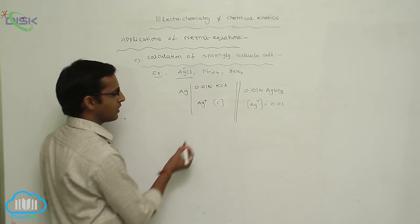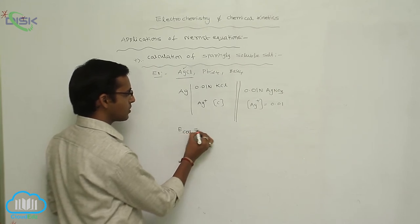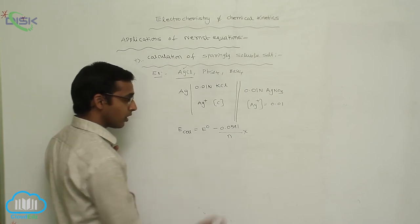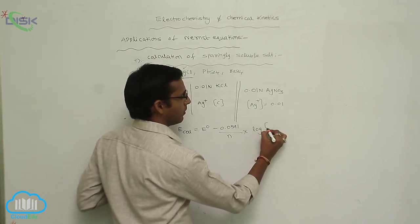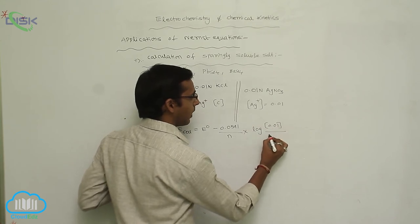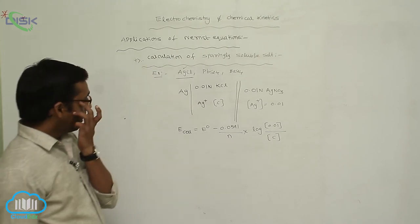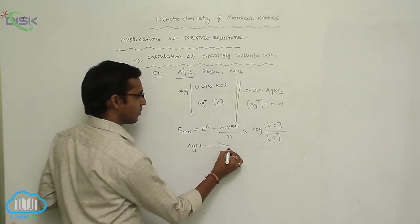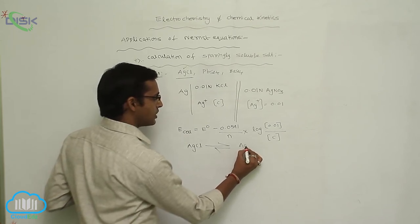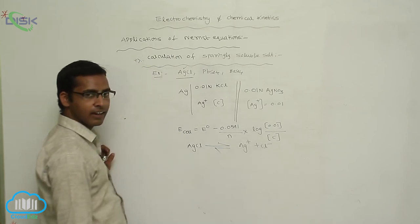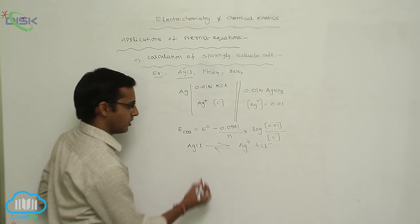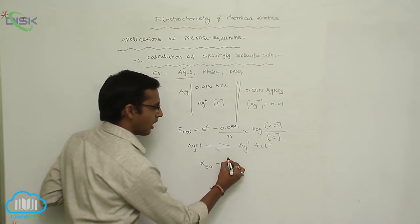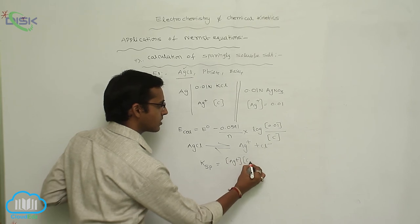When applying the EMF cell equation: E_cell = E° − (0.0591/N) · log(0.01/C). For sparingly soluble salts, the equilibrium constant is Ksp. AgCl undergoes decomposition: AgCl ⇌ Ag⁺ + Cl⁻. According to the law of mass action, Ksp = [Ag⁺] · [Cl⁻] = S · S = S².